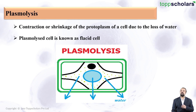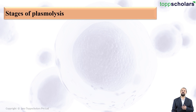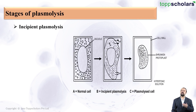A completely plasmolyzed cell becomes very flaccid and therefore it is called a flaccid cell. Now let us see the stages of plasmolysis. Take a look at this diagram.